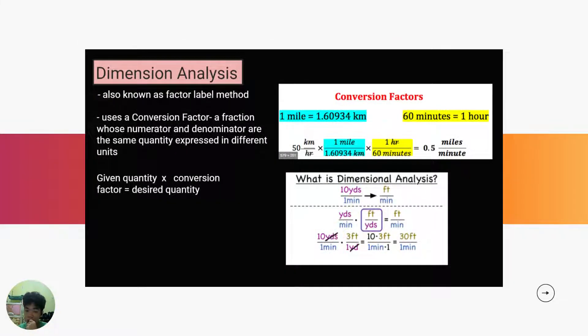Dimensional analysis, also known as factor label method, uses a conversion factor or fraction as numerator and denominator are the same quantity expressed in different units. To get the desired quantity, we multiply the given quantity to the conversion factor.